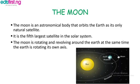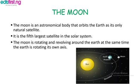The Moon is the fifth largest satellite in the solar system. The Moon is rotating and revolving around the Earth at the same time, while the Earth is rotating on its own axis. From the diagram you can see the way the Earth is rotating and revolving around the Sun, while the Moon is also rotating around the Earth.